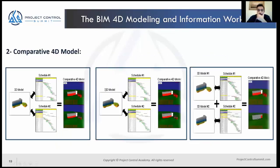The second type of 4D modeling is comparative. There are different types of comparative models. If we have one 3D model and two different schedules, we have two 4D models, which we call a comparative 4D model. An example: we have a project with the baseline schedule and the updated schedule, so we can compare them head to head.